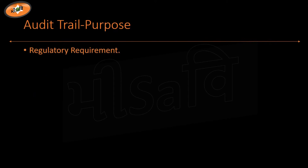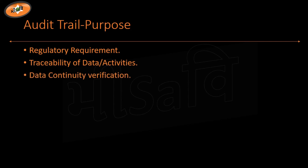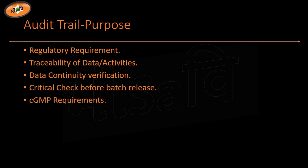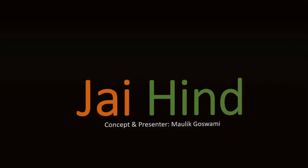Now, why is audit trail required? First, regulatory requirement — if you have to go through a process or audit. Second, traceability of data activities. Third, data continuity verification. Fourth, critical check before batch release. Fifth, if any information is missing, you can easily identify it. Sixth, cGMP requirement. This is why audit trail is very much required. Thanks, and please share this video.